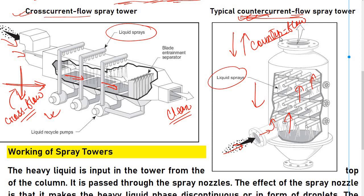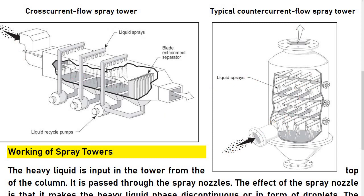If you have a flow, finally you get clean gas. If you have a liquid, you can use the liquid outlet. So this is the gas entry. This is the spray tower working.